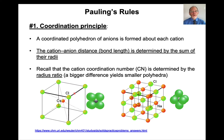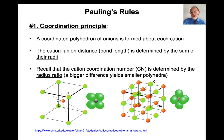The coordination principle states that a coordinated polyhedron of anions forms around each cation. This involves looking at the radius ratio to figure out how many anions pack around each cation. The bond length is determined by the sum of the radii — for example, the radius of cesium plus the radius of chlorine defines the bond length, which differs from sodium plus chlorine. The coordination number is largely determined by the radius ratio; a bigger difference yields smaller polyhedra.